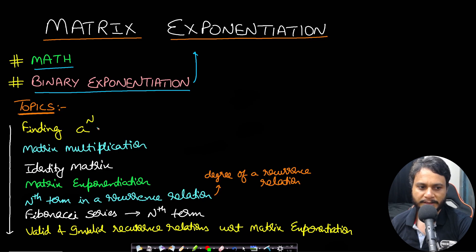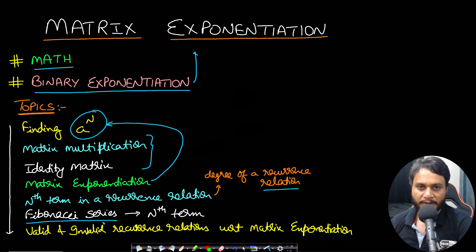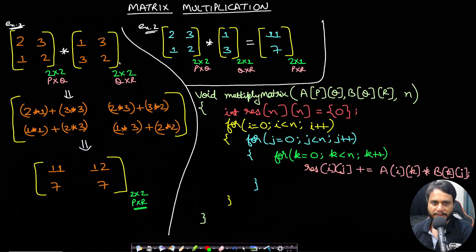The first thing we will look at is finding A to the power of N. We will revisit how to multiply matrices and find the identity matrix of any given matrix. Then we will apply matrix exponentiation to calculate A to the power of N, where A is the matrix and N is the power. We'll cover the Nth term in a recurrence relation, the degree of recurrence relation, and what types work for matrix exponentiation. We will also see an example using the Fibonacci series to find the Nth term in log N time. At the end, we will look at valid and invalid recurrence relations with respect to matrix exponentiation.